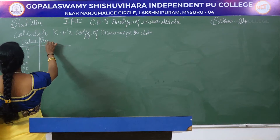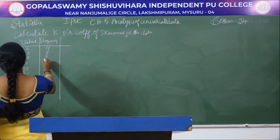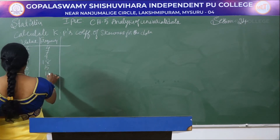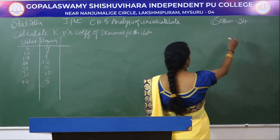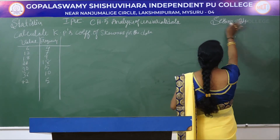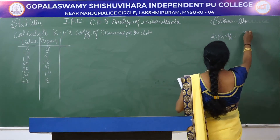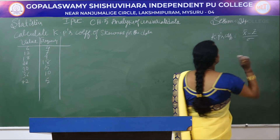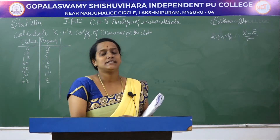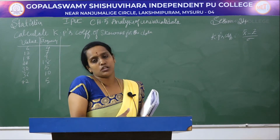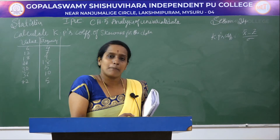The corresponding frequencies are: 4, 7, 9, 18, 15, 10, and 5. To find KP's coefficient, the formula is: KP's coefficient = (x̄ − z) / σ, where x̄ is the arithmetic mean, z is the mode, and σ is the standard deviation. For the given problem we have to calculate all three of these values, then we can find KP's coefficient.